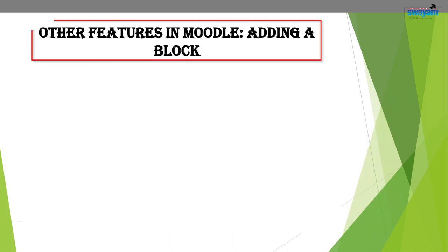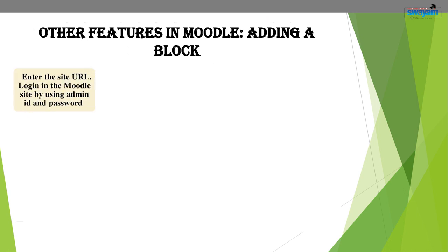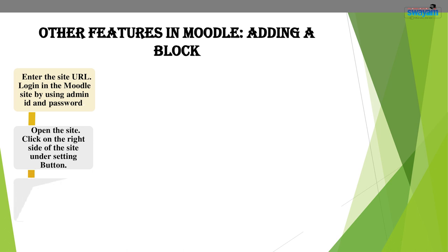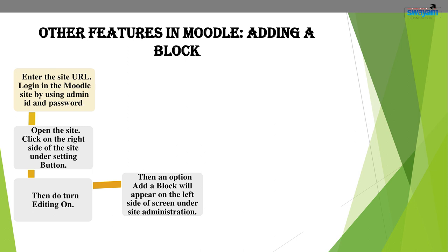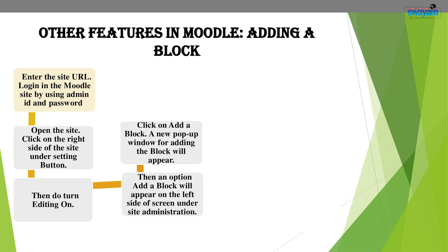After notification settings, let us move to another topic — adding blocks. Enter the site URL and login to the Moodle site using admin ID and password. Open the site, click on the right side under the settings button, then do Turn Editing On. An option 'Add a Block' will appear on the left side under the Site Administration button. Click on 'Add a Block' and a new pop-up window will appear on the right side.